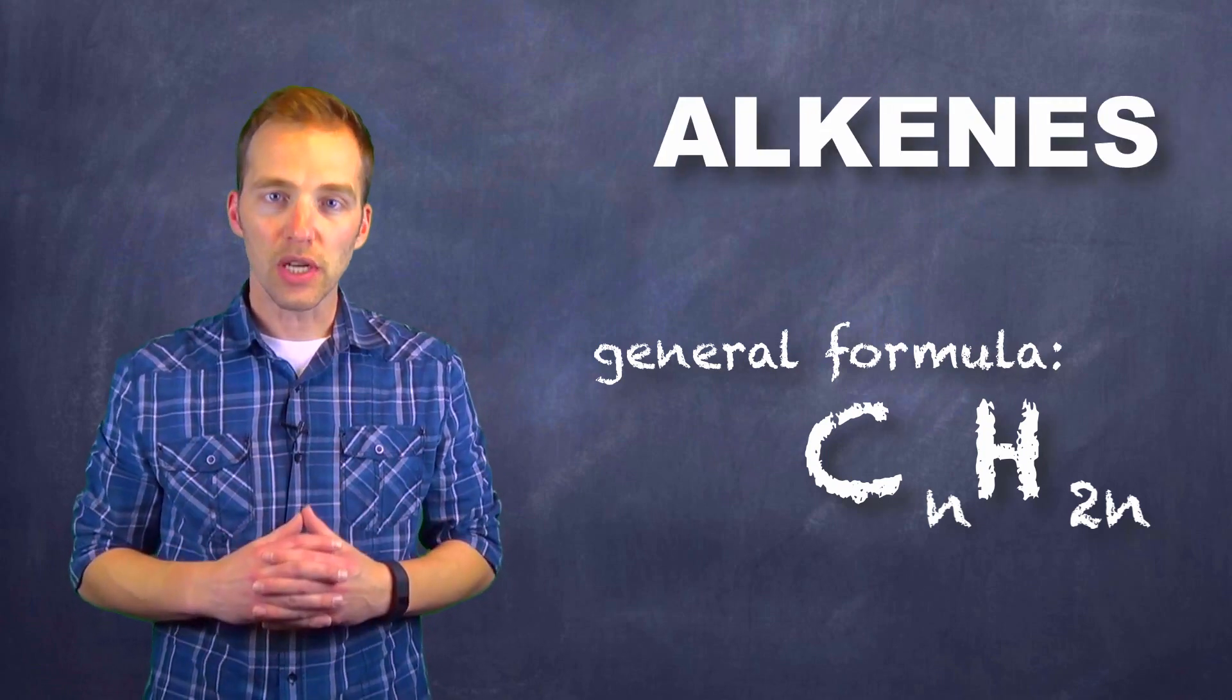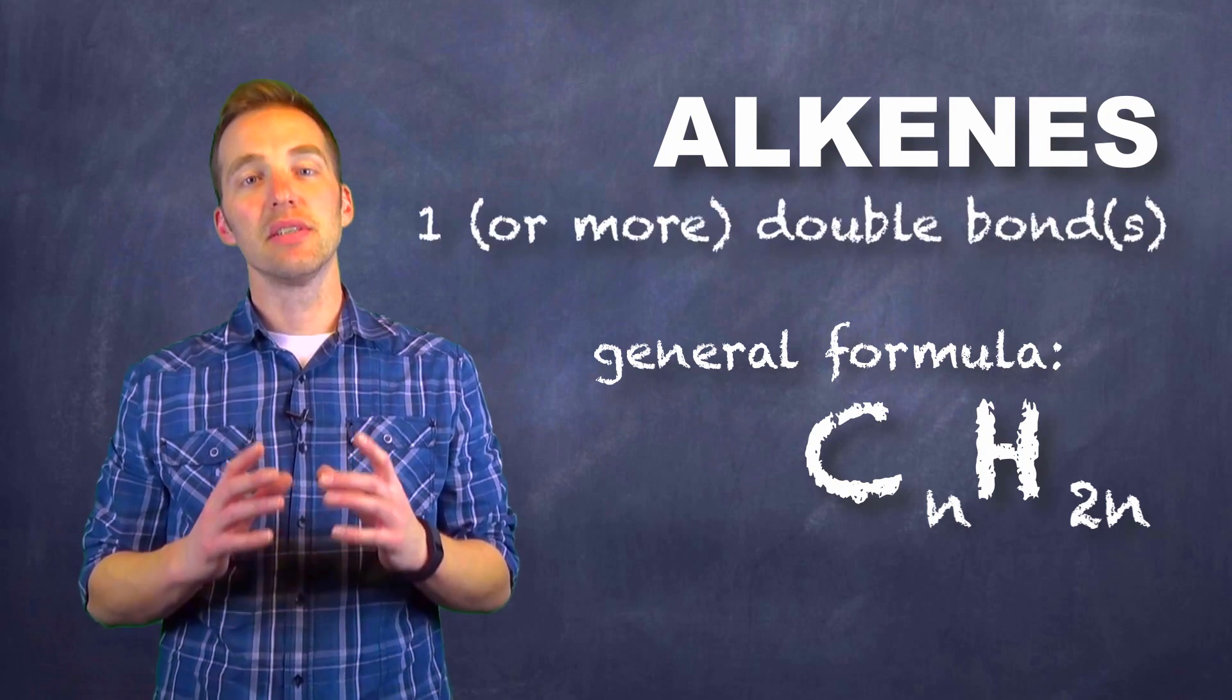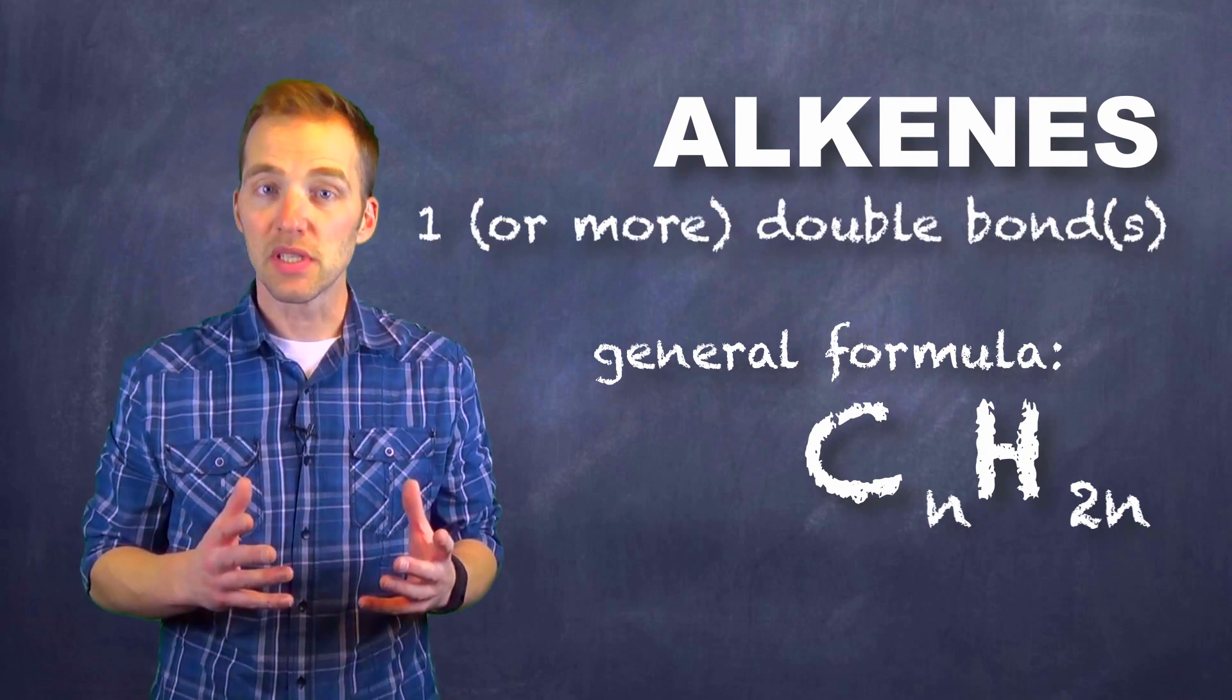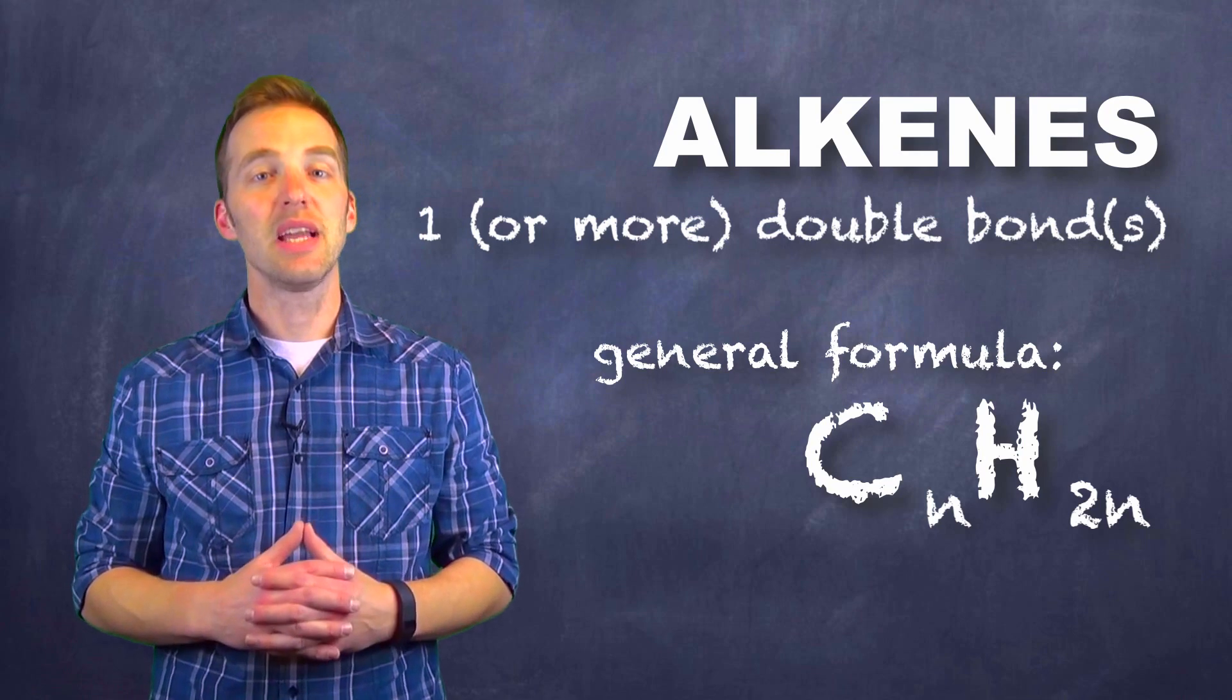And as we saw with that structure, an alkene possesses a multiple bond. And more specifically with alkenes, it possesses a double bond.